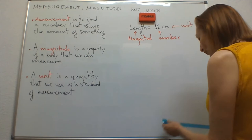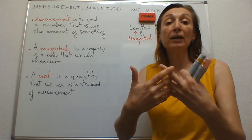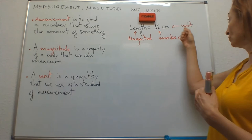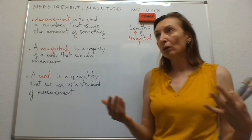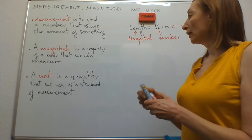Look, not all the properties of a body are magnitudes. For example, length is a magnitude because we can quantify it. We can express this property, the length, with a number followed by a unit. But there are other properties, for example, the beauty or ugliness that we cannot express with a number. They are not magnitudes.